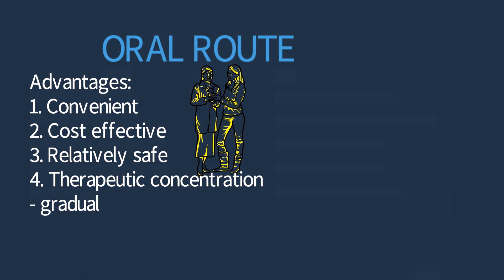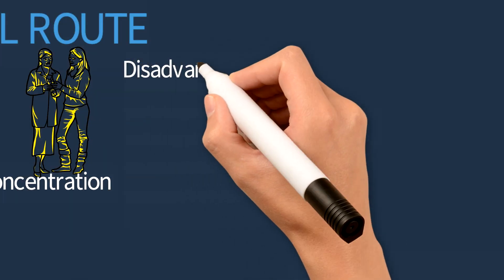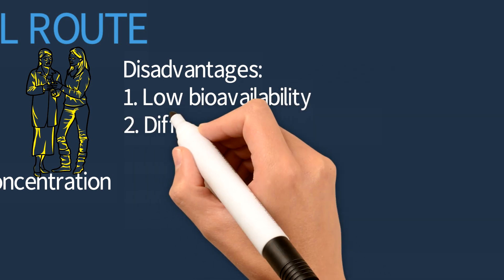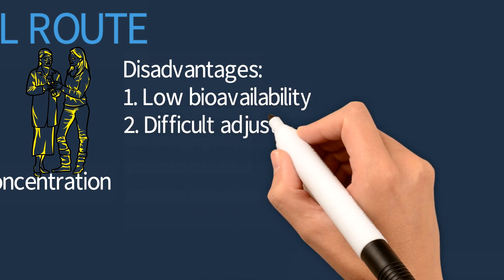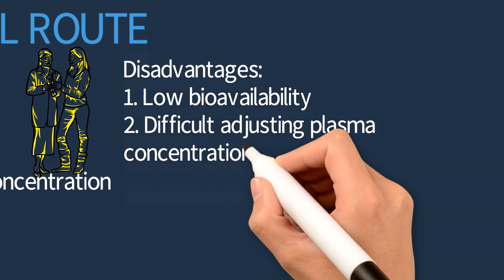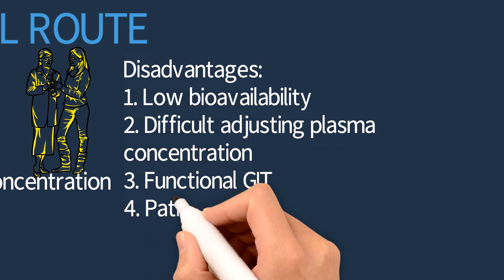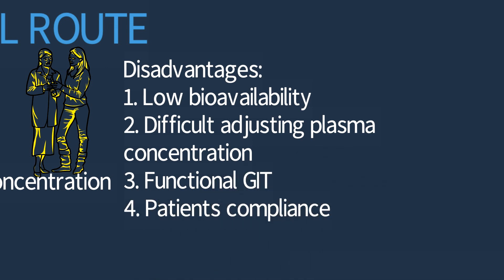The disadvantages of oral route of administration include low bioavailability following the first pass metabolism by the liver. There is also difficulty in maintaining the plasma concentration. This route requires a functional GI tract and also requires the compliance of the patients.